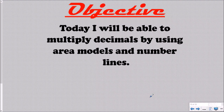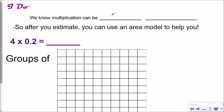So our objective today: I will be able to multiply decimals by using area models and number lines. Using models to help us solve for products of decimals. We know multiplication can really be repeated addition, and so we're going to use that frame of reference today when we talk about multiplying.